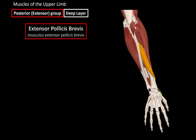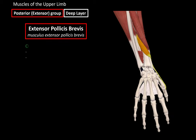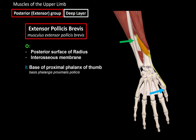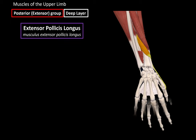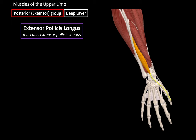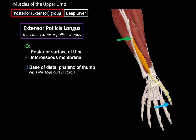Next is the extensor pollicis brevis, which originates from the posterior surface of the radius and the interosseous membrane, and inserts at the base of the proximal phalanx of the thumb. When it contracts, it extends and abducts the thumb. Then we have the extensor pollicis longus, which is longer. It originates from the posterior surface of the ulna and the interosseous membrane, inserts at the distal phalanx of the thumb, and its function is extension of the thumb, pulling it backwards.